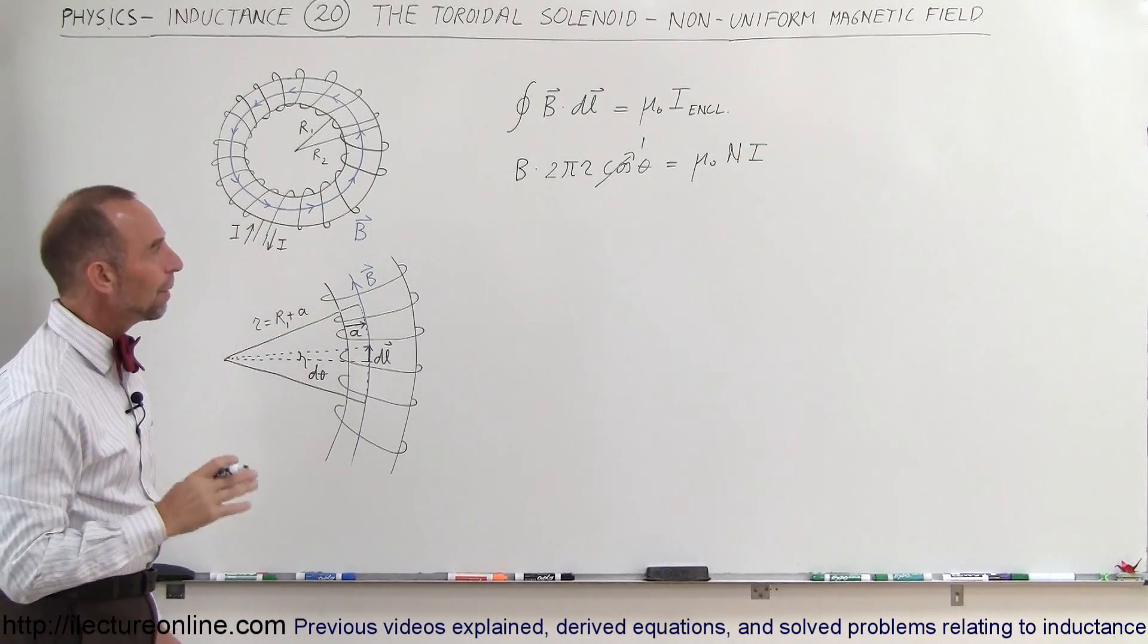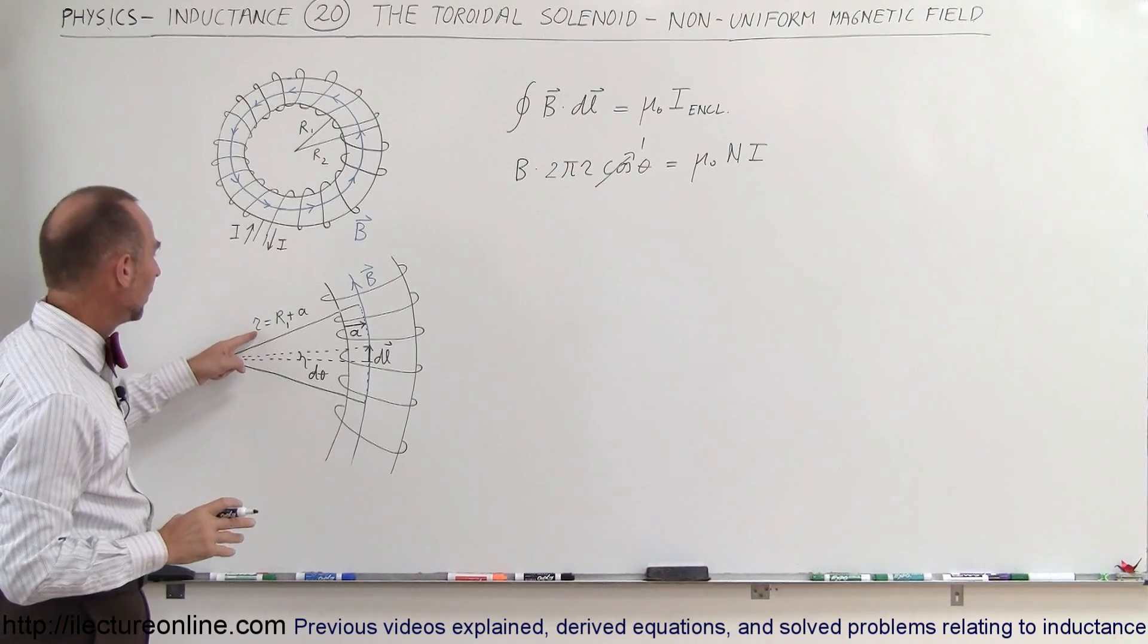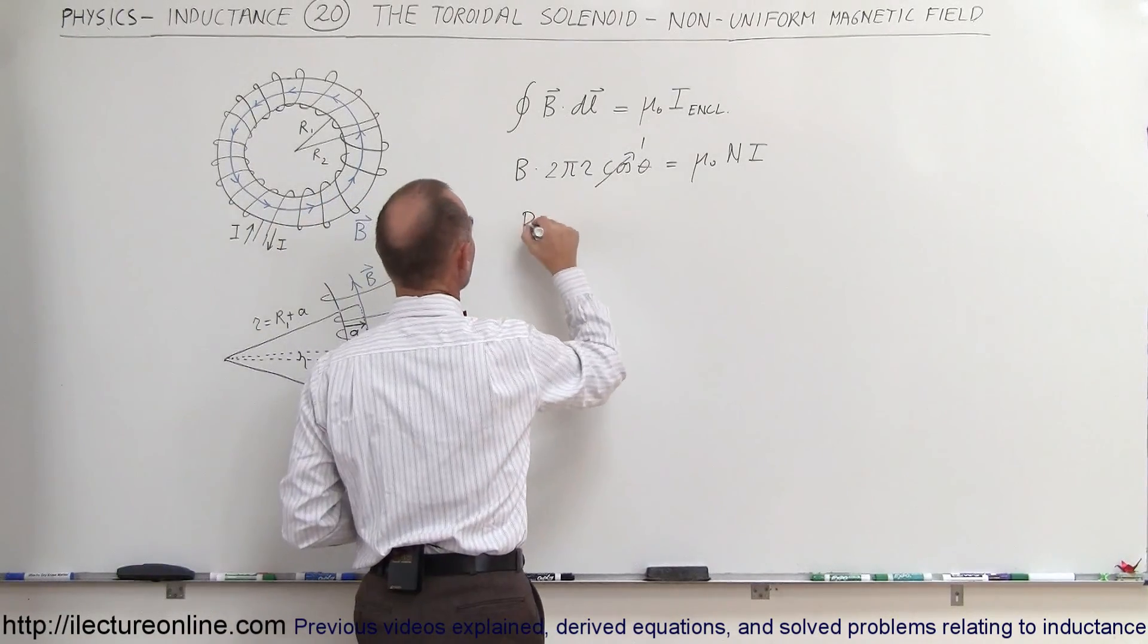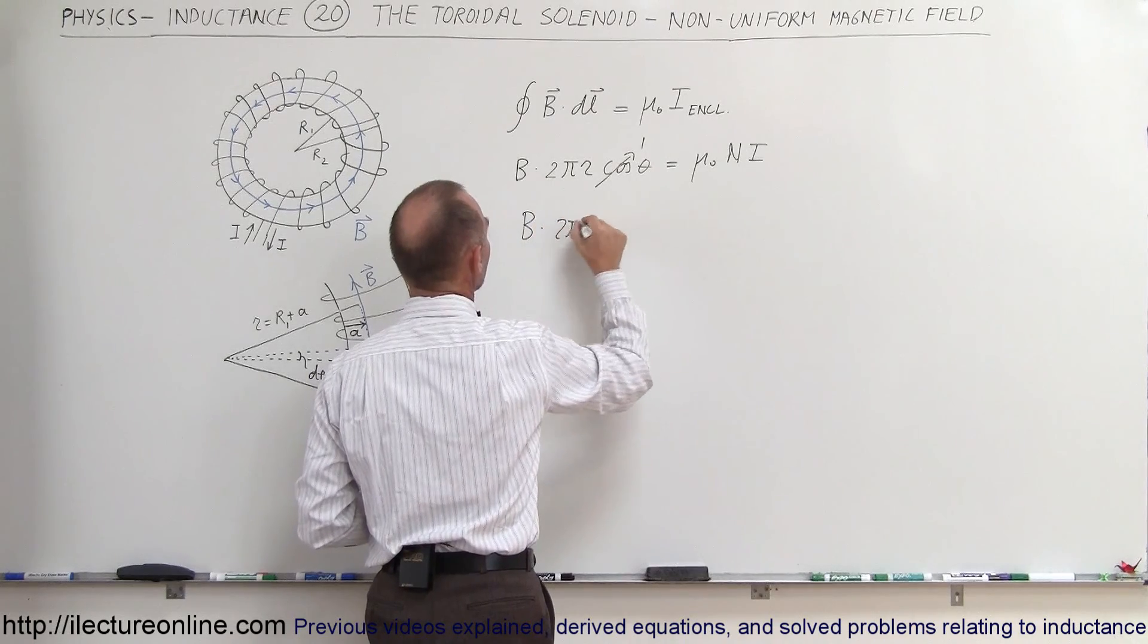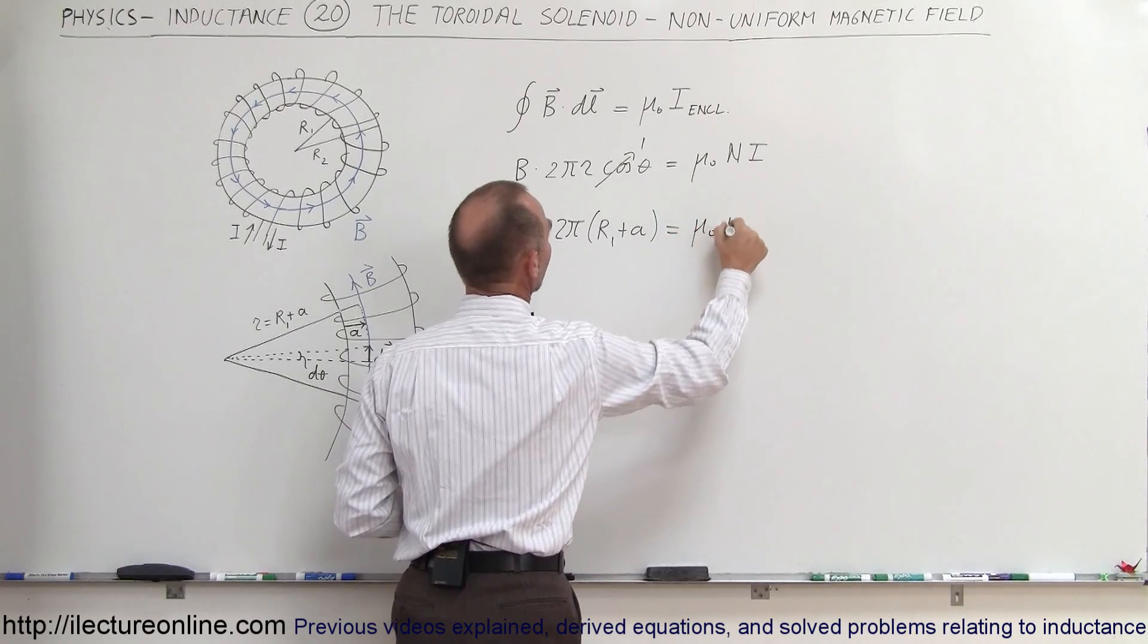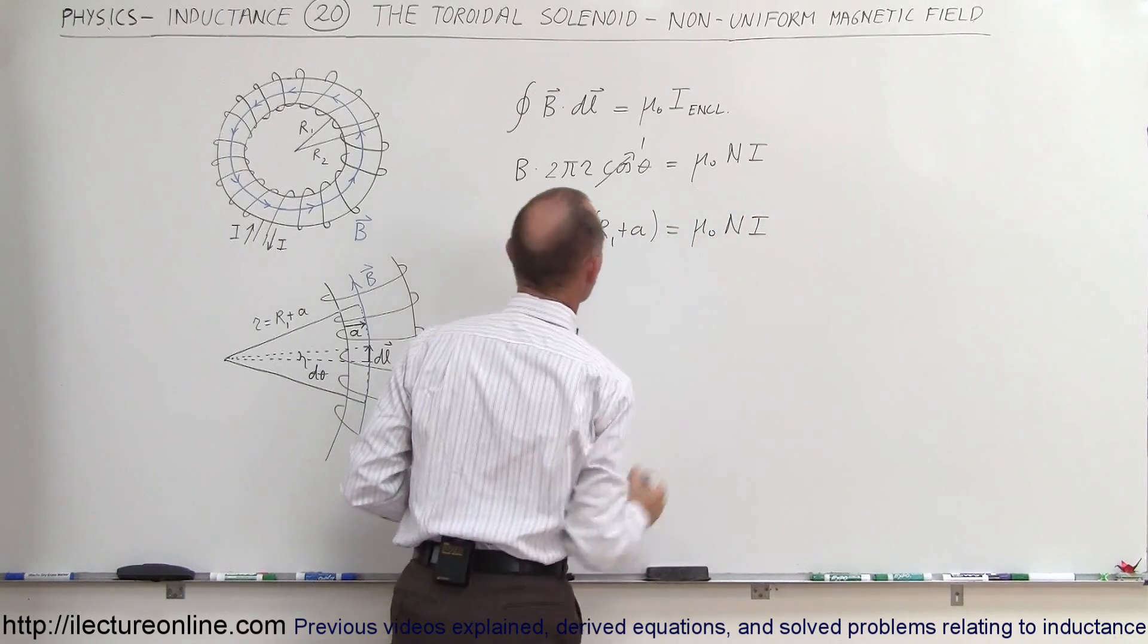So now we have 2 pi r but remember that r is going to be equal to r1 plus A so let's replace that. So we have B times 2 pi times r1 plus A equals mu sub naut times n times I.